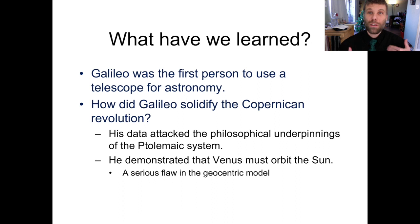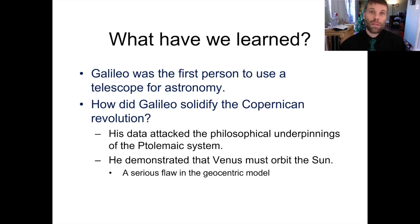Galileo also managed to knock down arguments against the heliocentric solar system and to undermine the philosophical underpinnings that had led to the Ptolemaic system in the first place. So Galileo's observations using his telescope were one of the most important steps towards acceptance of a Sun-centered, or heliocentric, solar system during the heliocentric revolution. Thanks for joining me, and I hope to talk to you again soon on another topic in astronomy.